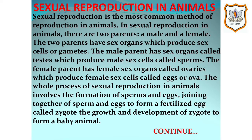The whole process of sexual reproduction in animals involves the formation of sperms and eggs, the joining together of sperm and egg to form a fertilized egg called zygote, and the growth and development of the zygote to form a baby animal.